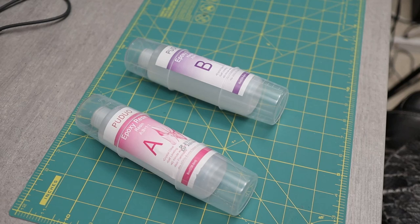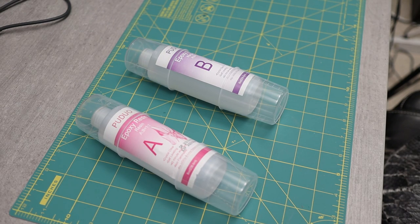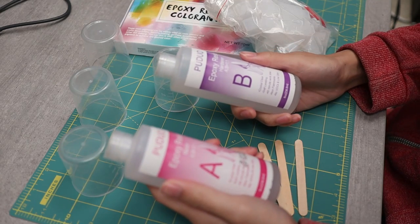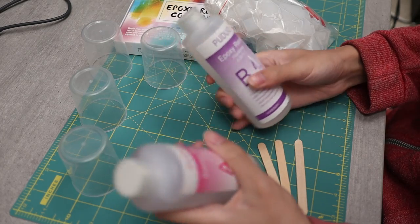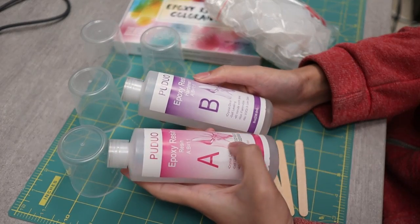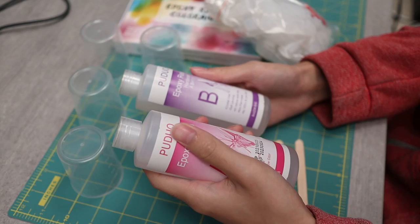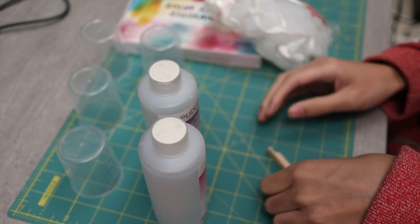We'll start out with the most obvious, the resin. This is just a two-part resin that I found on Amazon. I didn't do too much research on different brands or anything like that, it just seemed like this product was easy to work with because all you have to do is pour a one-to-one ratio. It's just a standard clear resin that should give us a nice transparent effect.